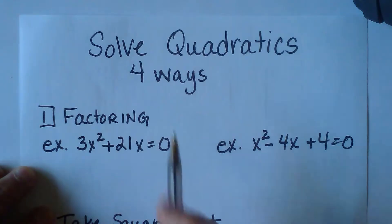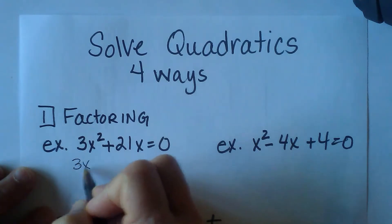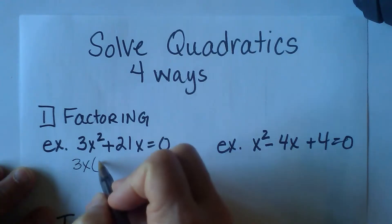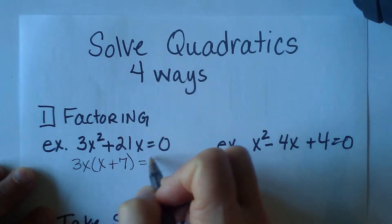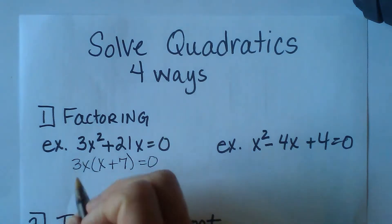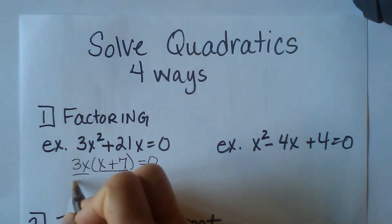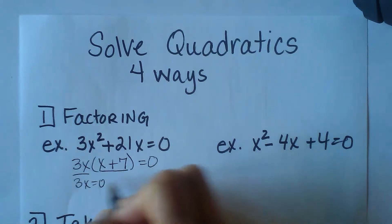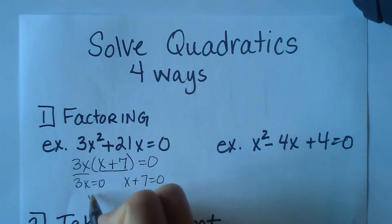So this one only has two terms, so I'm going to factor out the common factor of 3x, and I'm left with x plus 7 equals zero. Once you get it factored, then you're going to set each factor equal to zero. So this is a factor, and the binomial x plus 7 is a factor.